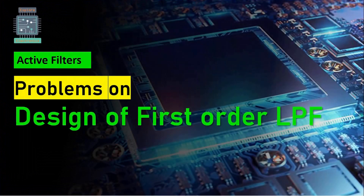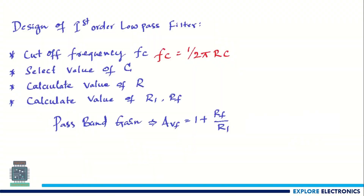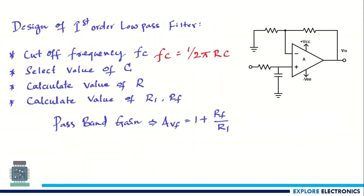Welcome back to Explore Electronics. In this video, let's discuss some problems on design of first-order low pass filters. In a first-order low pass filter, the circuit has one pair of RC network. We call it a first-order low pass filter, and the cutoff frequency depends on the values of R and C. The expression is: fc = 1 / (2π RC).